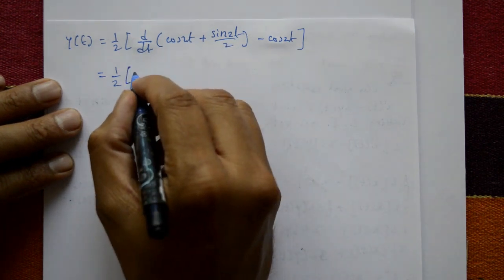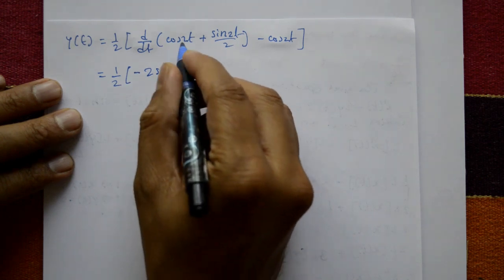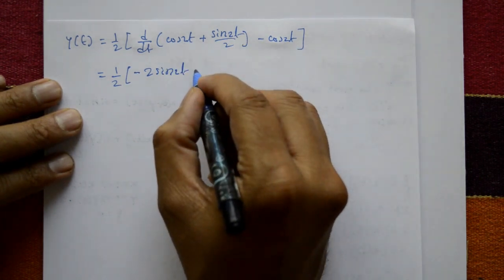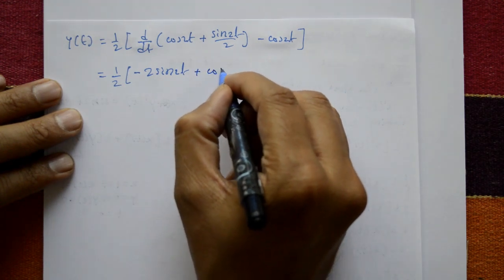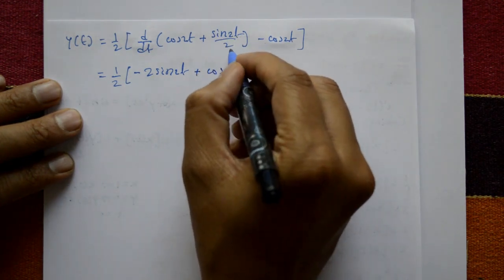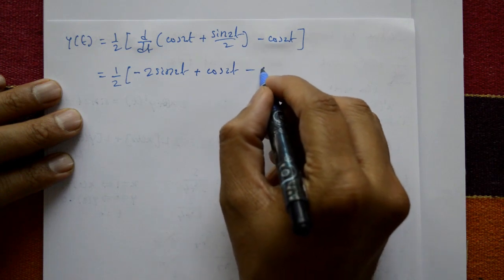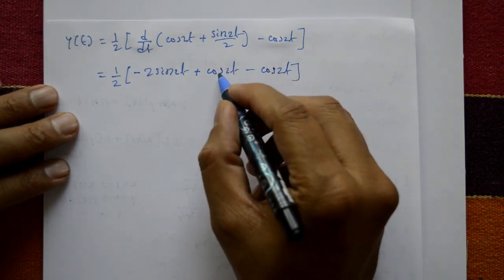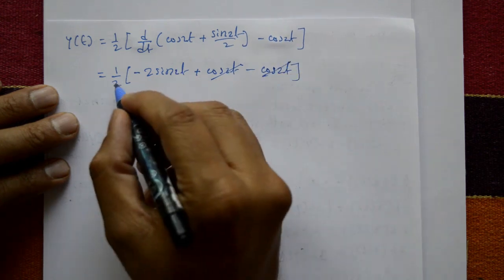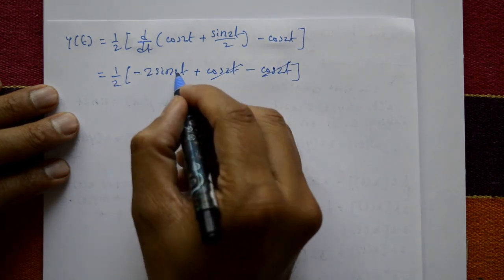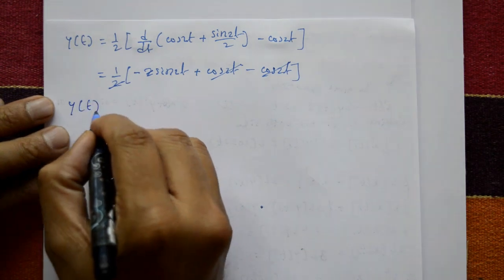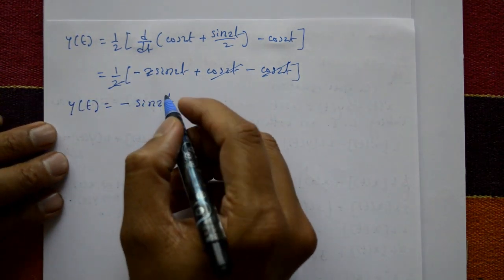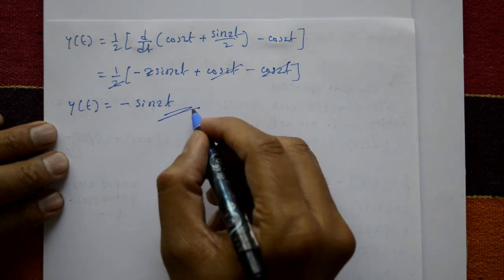Differentiating x(t): dx/dt equals minus 2 sin 2t plus cos 2t. Substituting and simplifying: y(t) equals (1/2)(minus 2 sin 2t plus cos 2t) minus cos 2t/2. The cos 2t terms cancel, leaving y(t) equals minus sin 2t. This is the required solution.